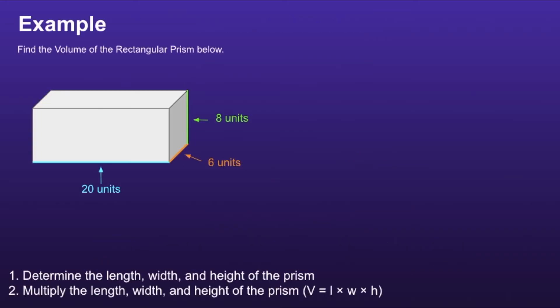Example. There are two steps to find the volume of a rectangular prism. The first step is to determine the length, width, and height of the prism. If we look at the rectangular prism on the screen, we can recognize that the length is 20 units, the width is 6 units, and the height is 8 units.